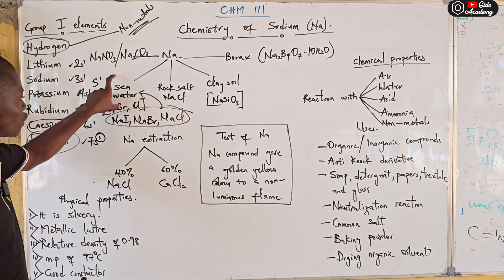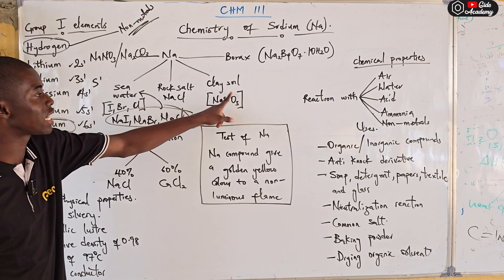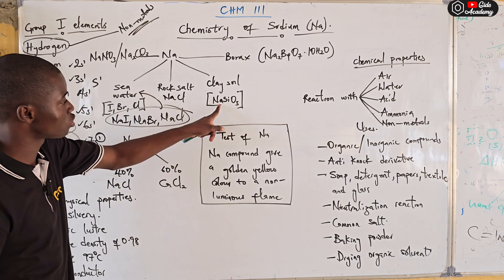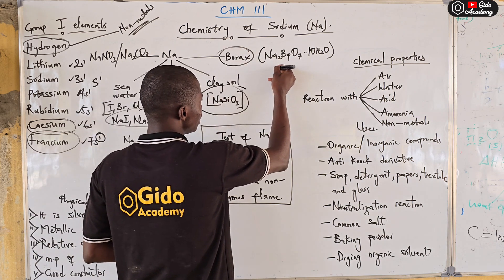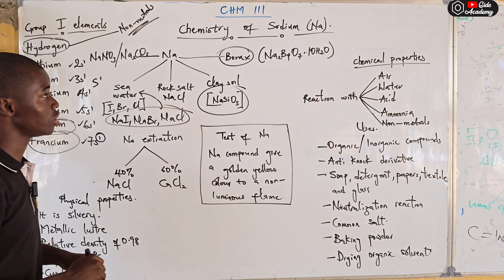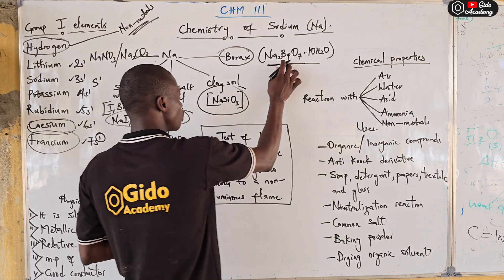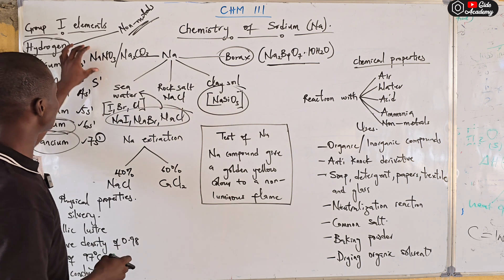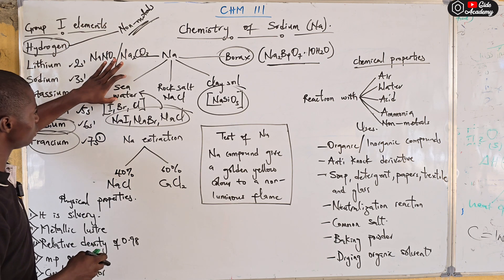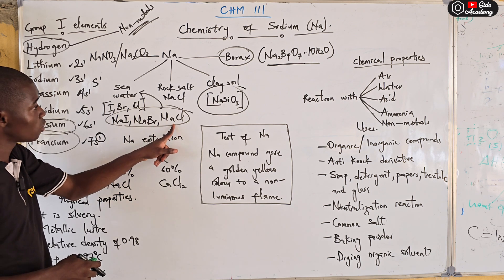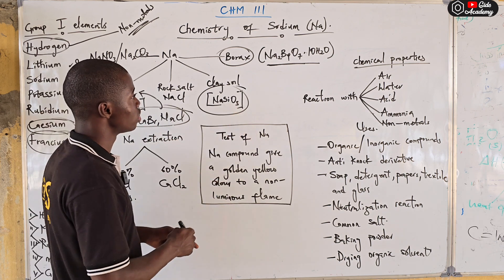Sodium can also be found in clay soil as sodium tetraoxosilicate. Borax is Na₂B₄O₇·10H₂O (sodium tetraborate decahydrate) and is another compound in which sodium occurs naturally. So to summarize: sodium occurs as sodium nitrate, sodium trioxocarbonate, in sea water as sodium iodide/bromide/chloride, as rock salt (NaCl), in clay as sodium tetraoxosilicate, and as borax.